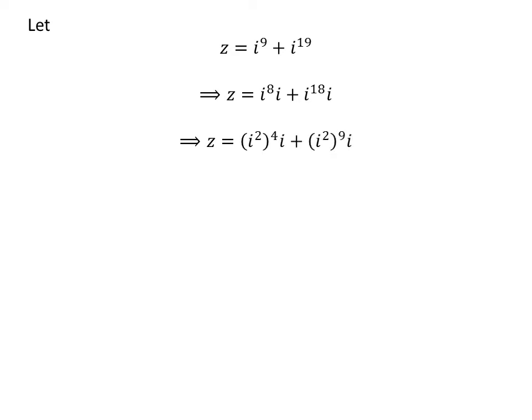As 8 is 2 times 4 and 18 is 2 times 9, we can express the above statement as z is equal to square of i raised to the power of 4 times i plus square of i raised to the power of 9 times i.